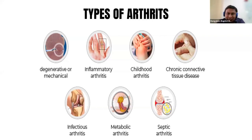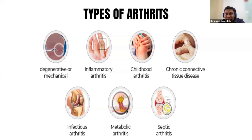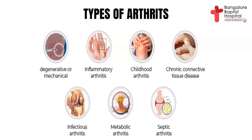Going on to the types of arthritis, it's very important to know that arthritis is a broad term. Under arthritis, there are multiple different types. One, mainly what most patients in the elderly age will have, is something called a degenerative or mechanical type of arthritis. Then you have the inflammatory type, which can occur at any age. Then you have juvenile or childhood arthritis, more common in children. Then you have other connective tissue diseases where joints are involved, and infectious arthritis where infection leads to arthritis. You can also have metabolic arthritis when certain crystals accumulate in the joints.